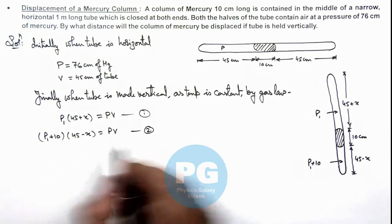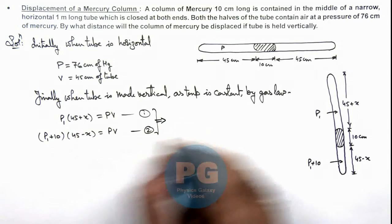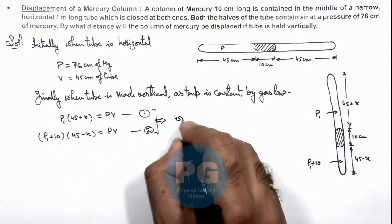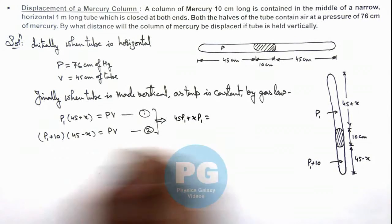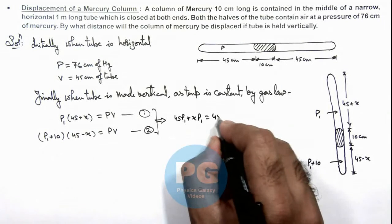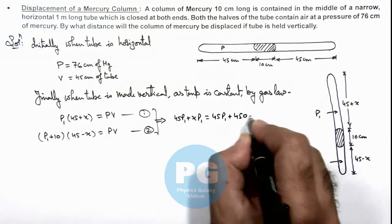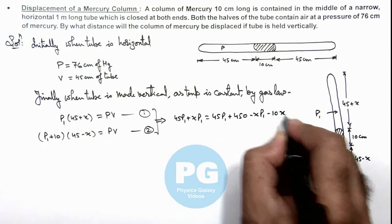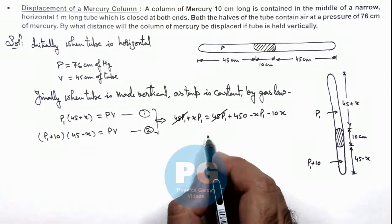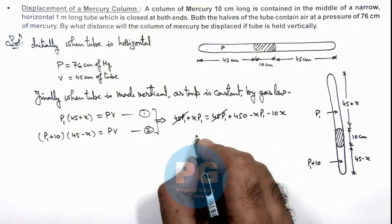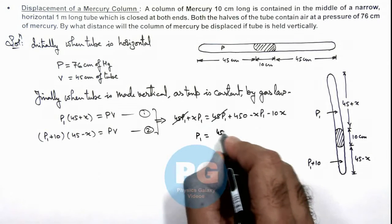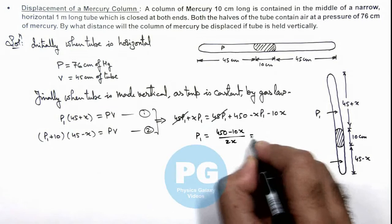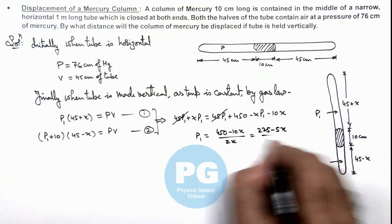Here if we equate the two terms on the left hand side we can see it is 45 p1 plus x p1 is equal to, this is 45 p1 plus 450 minus x p1 minus 10 x. Here 45 p1 gets cancelled out. On simplifying the value of p1 we are getting is 450 minus 10 x divided by 2 x, or it is 225 minus 5 x by x.